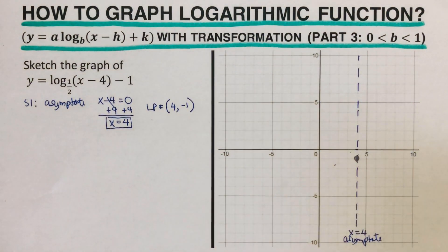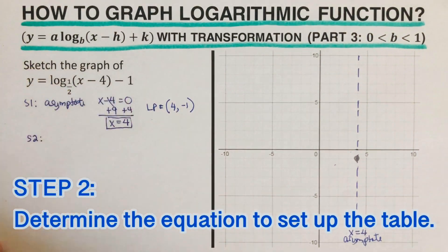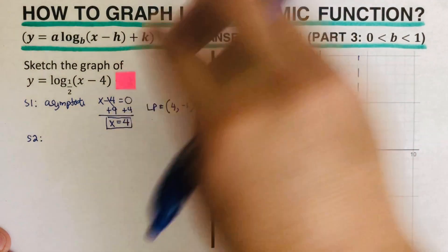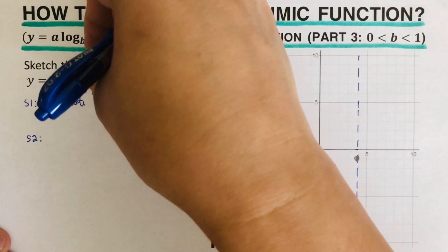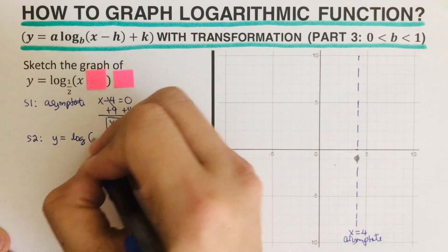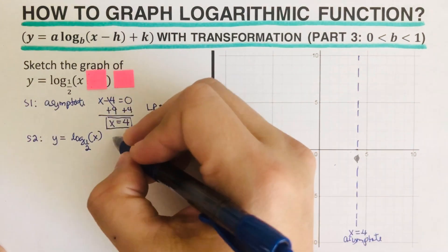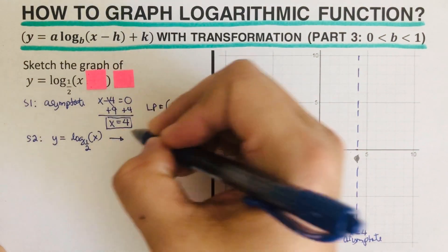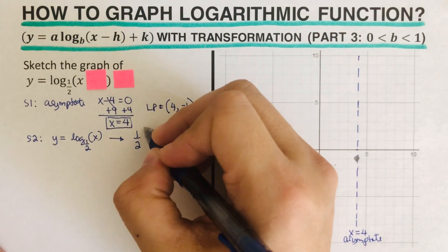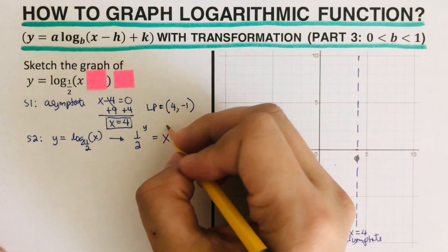We are now ready to move on to the second step. The second step is to determine the equation to set up the table. In order to determine the equation, we are going to cover the h and k, so the equation comes out. We are supposed to change this into its exponential form.